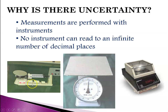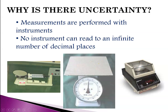Over here is a triple beam balance that you might have used in junior high, and those are typically good for maybe a tenth and sometimes a hundredth of a gram. The second one is what you might use at the post office to measure the weight of a package, and it's probably good to about a quarter of a pound. The third one is what you might see in a lab — it's called an analytical balance, and this particular one can measure to the ten-thousandths place. So again, different instruments have different amounts of uncertainty.